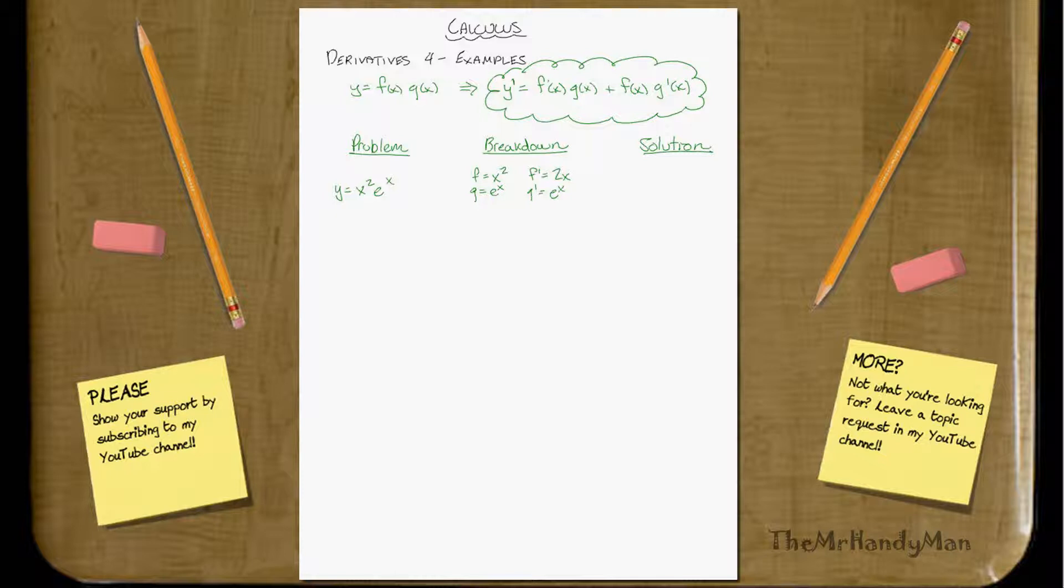So then we just essentially plug it into our little cloud equation. y prime is equal to f prime, which is 2x, right, times g, which is e to the x, plus f of x, which is x squared, and then e to the x again. So y prime is really equal to x squared plus 2x, all multiplied by e to the x. That's just simplified a little bit.